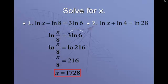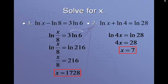And number 2, the plus sign between these two logs means we're multiplying. So natural log of 4x equals natural log of 28. Cancel out the natural log on both sides. 4x equals 28 divided by 4, x equals 7 for a final answer.